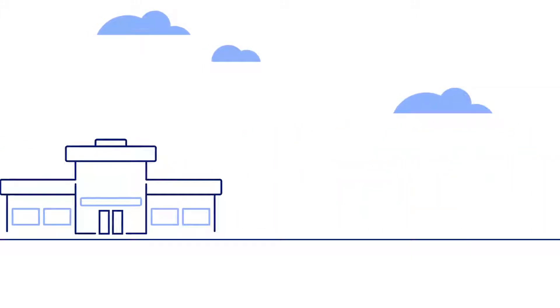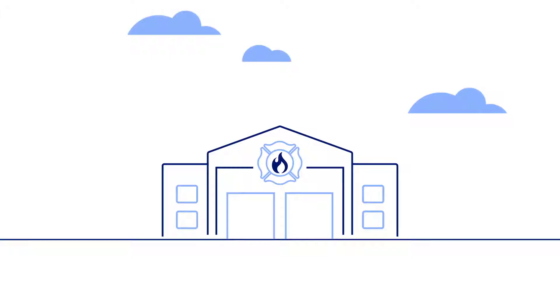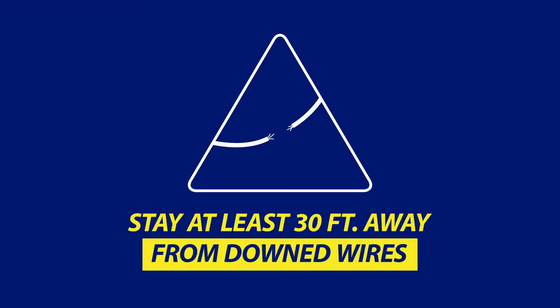Essential services such as hospitals, critical care facilities, and police and fire stations receive top priority, along with any potentially hazardous situations caused by the outage.